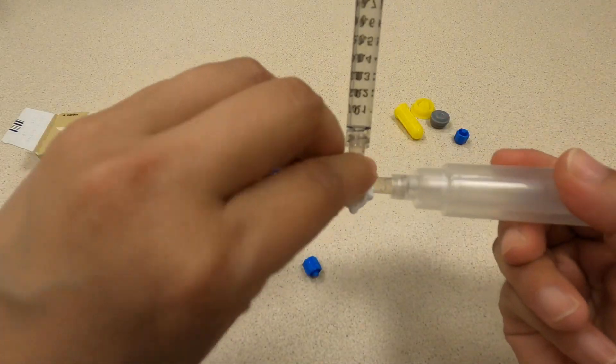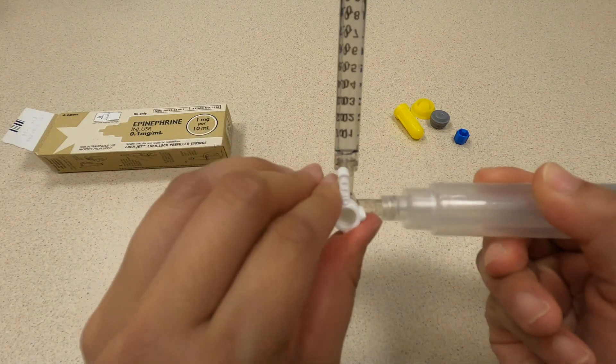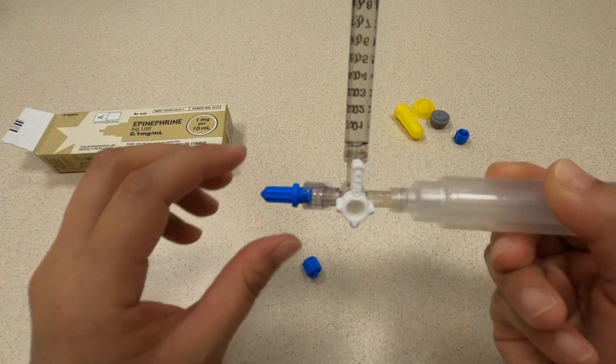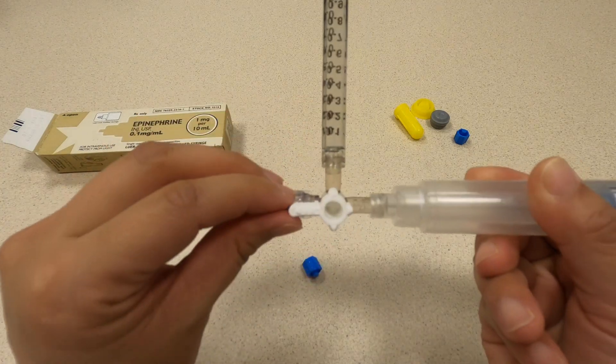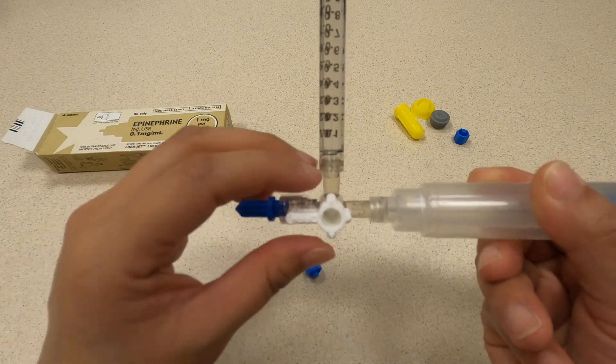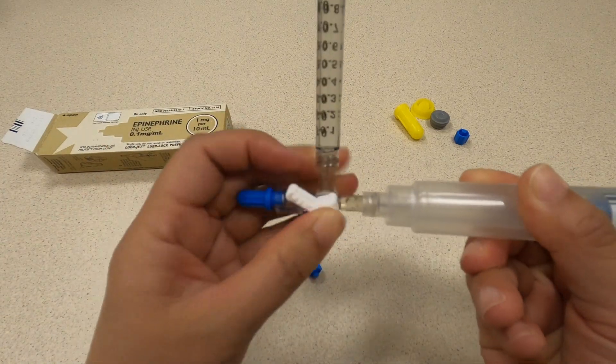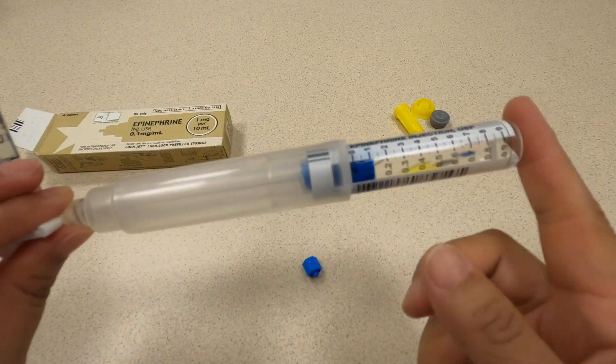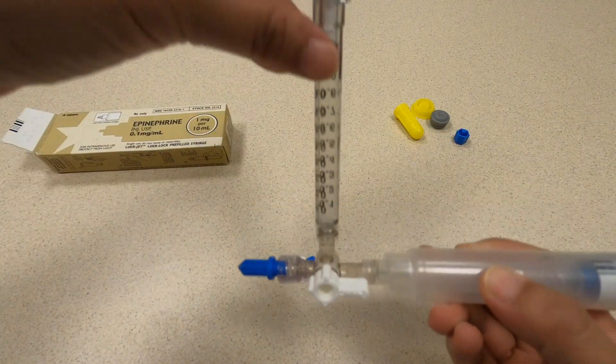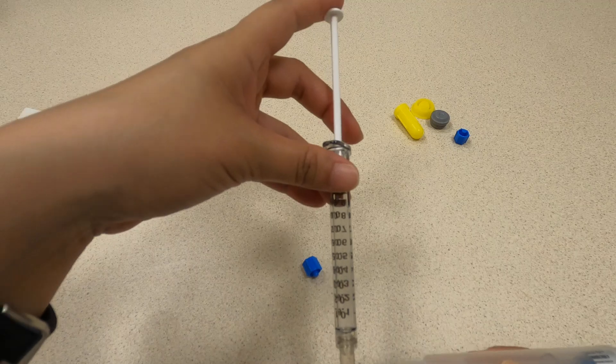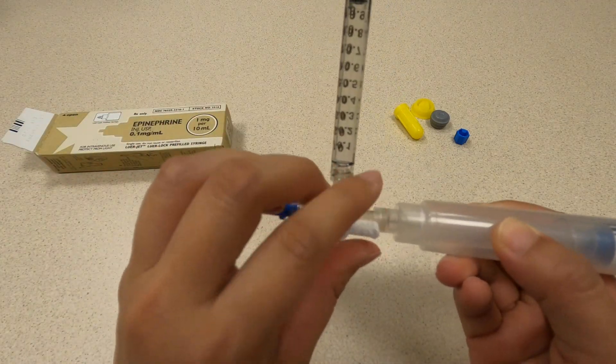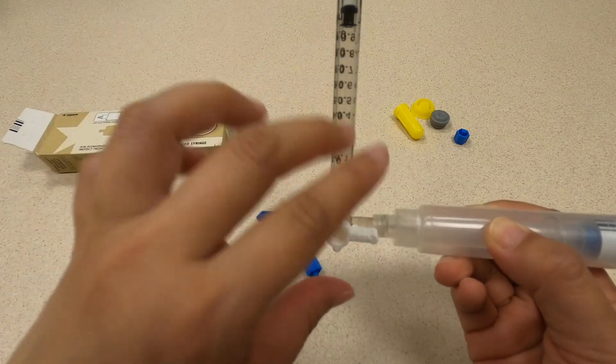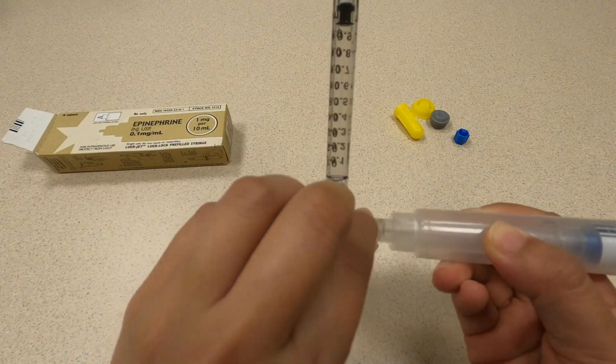Some people will actually attach this directly to the patient. The way they do it is basically draw up the dose in this position, then turn it off completely to the epi, because you don't want to accidentally give this whole thing. Then you would push down on this syringe in order to give it to the patient. The advantage of this is that you keep it all in a closed circuit and you keep everything clean.